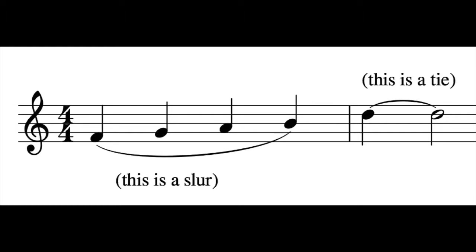In MuseScore you can basically use a slur for everything, since a slur looks the same as a tie. However, when you do a playback, the notes that are the same connected by a slur would sound separate.